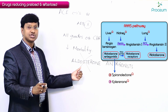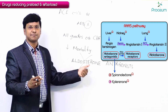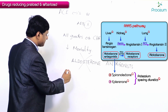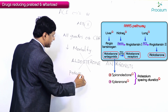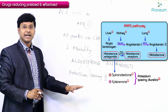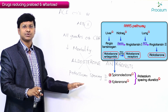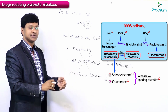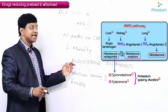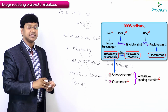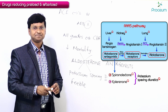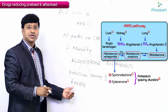The aldosterone antagonists include spironolactone and eplerenone. These two drugs antagonize the aldosterone receptors. Both spironolactone and eplerenone are potassium-sparing diuretics. However, the diuretic effect in patients with congestive heart failure produced by these aldosterone antagonists is very feeble.